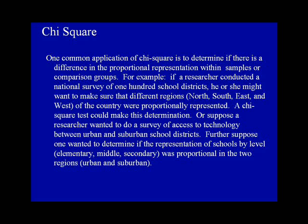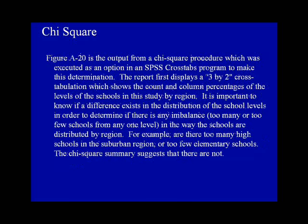A Chi-square test could make this determination. Or suppose a researcher wanted to do a survey of access to technology between urban and suburban school districts, and wanted to determine if the representation of schools by level — elementary, middle, and secondary — was proportional in the two regions, urban or suburban. Figure A20 is the output from a Chi-square procedure which was executed as an option in an SPSS crosstabs program to make this determination.